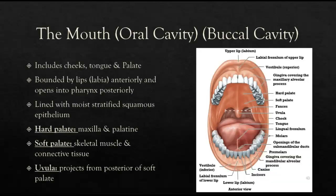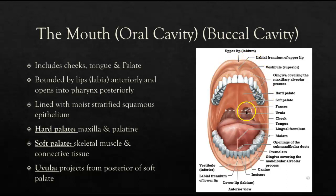Here we have the mouth and our oral cavity, which is also known as the buccal cavity, and it includes the cheeks, the tongue, and our palate. It is bounded by our lips, which we call labia anteriorly, and it opens up into the pharynx posteriorly. The tissue is lined with moist stratified squamous epithelium.